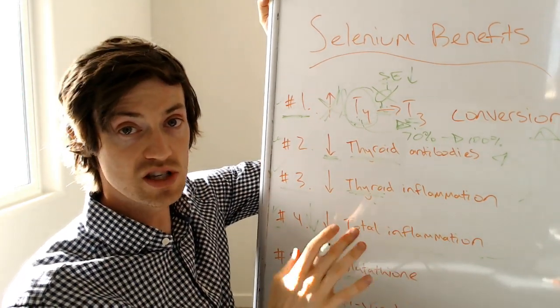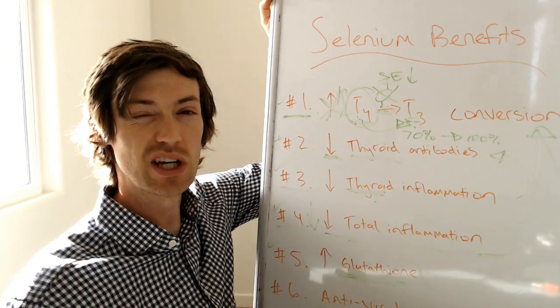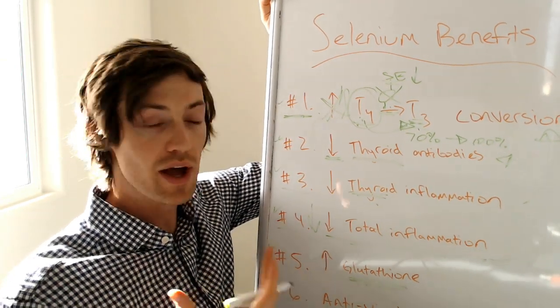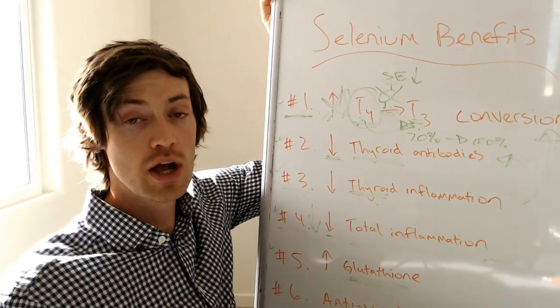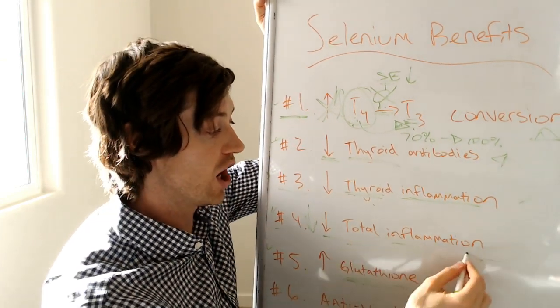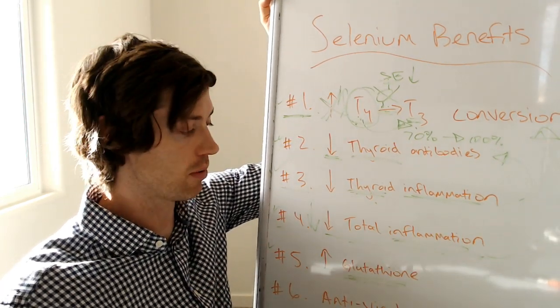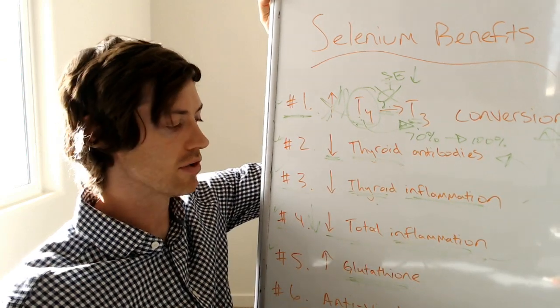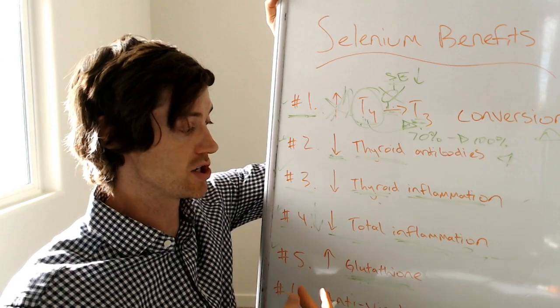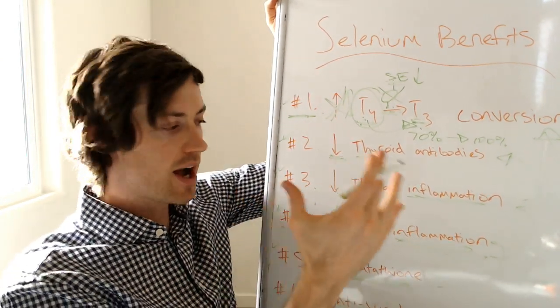Now, again, the reason selenium is probably doing this is because number five, it helps your body produce something called glutathione, which is sometimes referred to as the master antioxidant. So glutathione is helping clean up the cells, preventing free radical damage, reducing inflammation in specific glands like your thyroid and in other cells in your body. And glutathione is incredibly important. You can actually take glutathione as a supplement, although it's not quite as effective. That's another topic, but glutathione, if used correctly, can actually help reduce inflammation as well, which is helping all of these things. So you can kind of see how selenium is tying together at multiple levels.